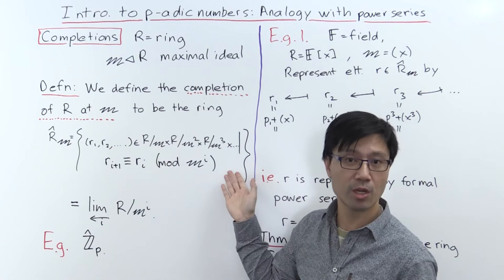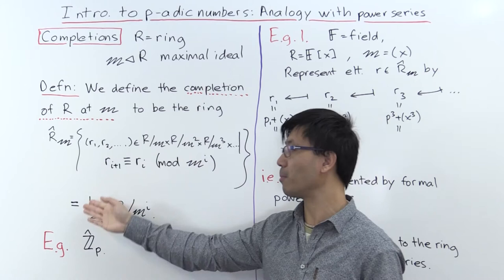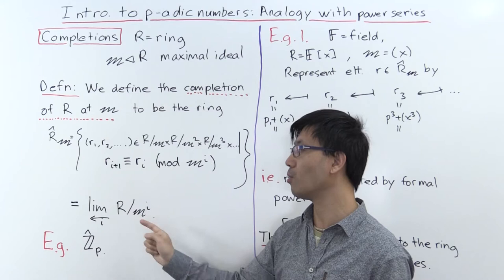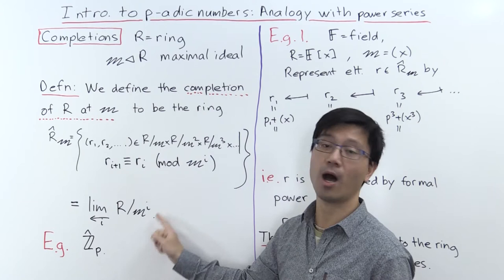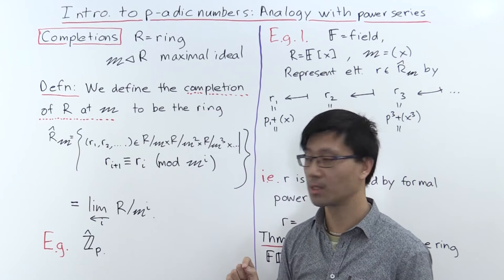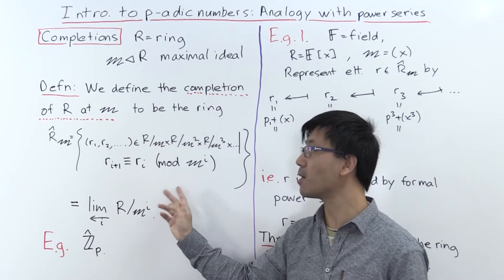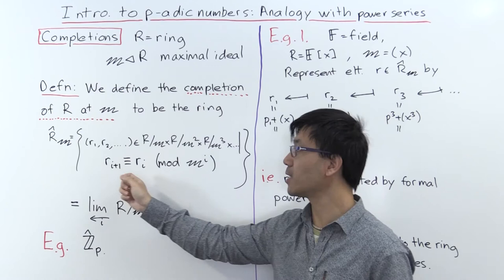This is an example of a much more general type of construction called the inverse limit. You might recognise this as the inverse limit, and the notation is this inverse limit symbol — you're taking the inverse limit of all these quotients R modulo M to the i, for i running over all the positive integers.